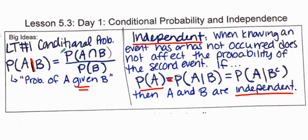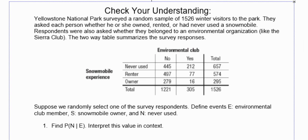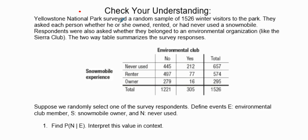We want the notes on how to set up conditional probabilities and independence. Let's talk about this through an example. Yellowstone National Park surveyed a random sample of 1,526 winter visitors to the park. They asked each person whether they owned, rented, or never used a snowmobile.